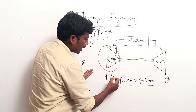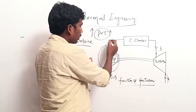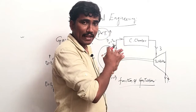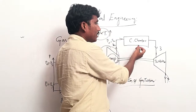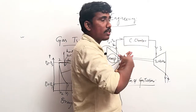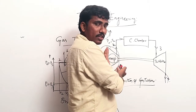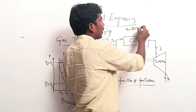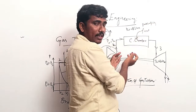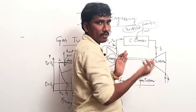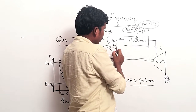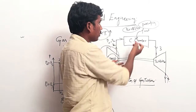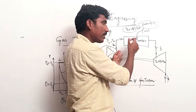At the entry of the combustion chamber, the pressure and temperature of the air will be maximum. In the combustion chamber, we will try to ignite the fuel using high-pressurized air. We supply fuel such as kerosene or paraffin oil into the combustion chamber. Due to the high temperature and pressure air, we sprinkle kerosene into the combustion chamber according to requirement, and the fuel gets combusted.